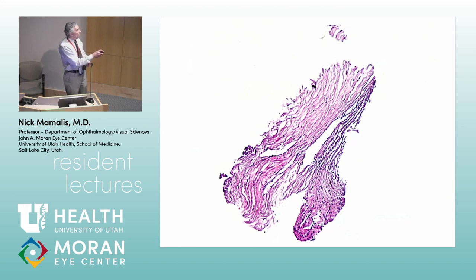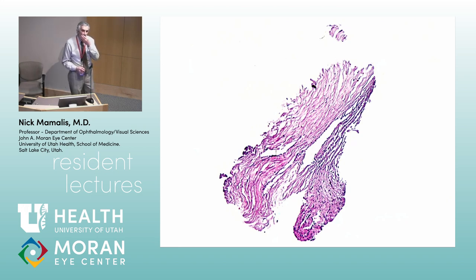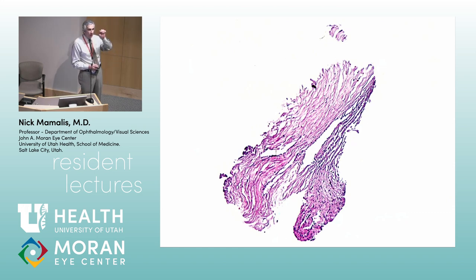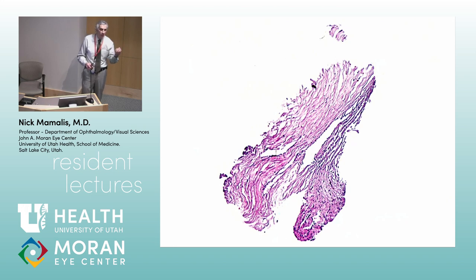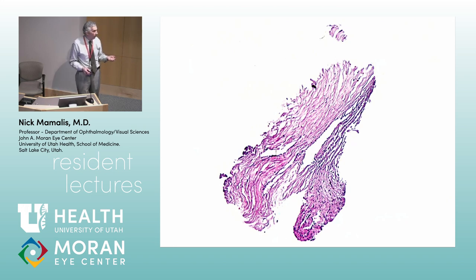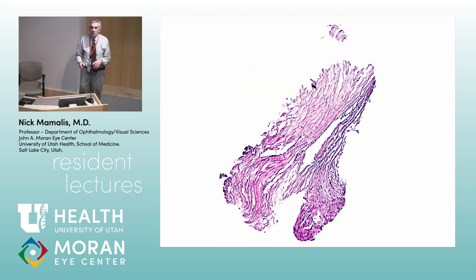Schwalbe's line. So Schwalbe's line — what exactly is Schwalbe's line? It's the termination of Descemet's membrane. So it's where Descemet's membrane ends. When you're looking in a goniomirror at the angle, you really want to know your structures because that's how you can decide: is the angle open, is it narrowed, is it recessed, are there synechiae, what's going on in the angle? The first structure is the termination of Descemet's membrane, called Schwalbe's line.